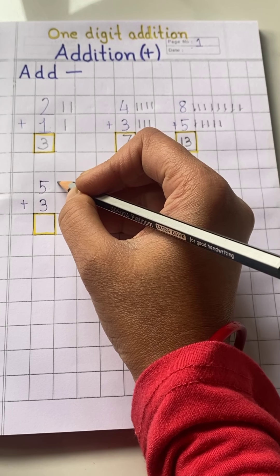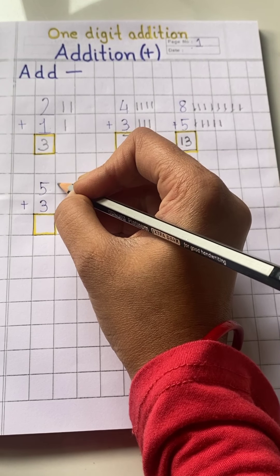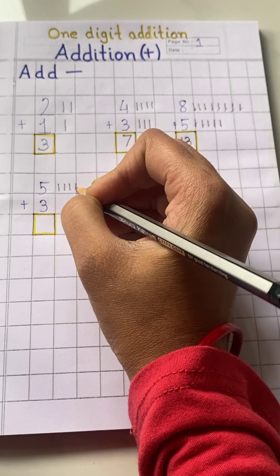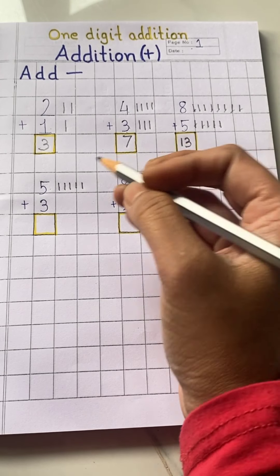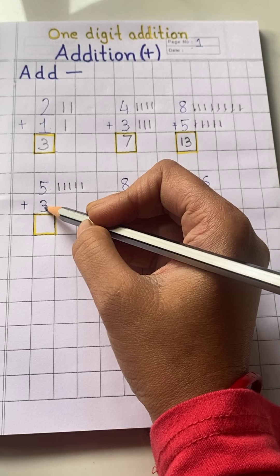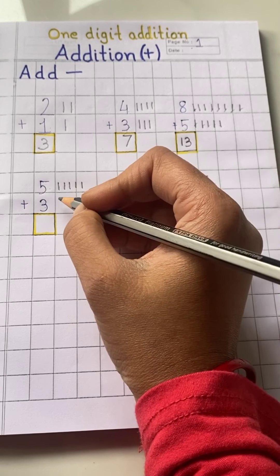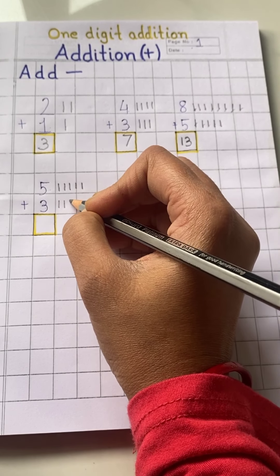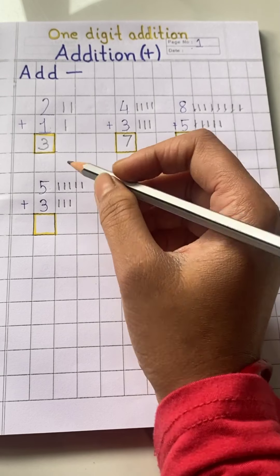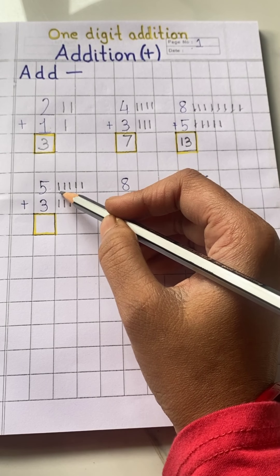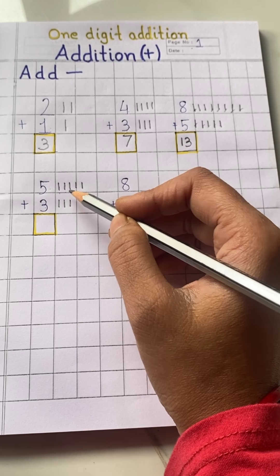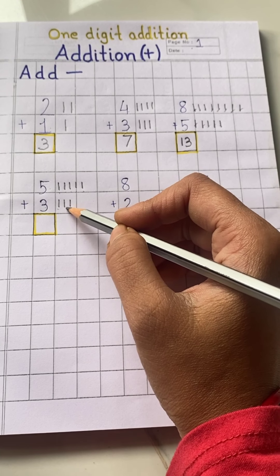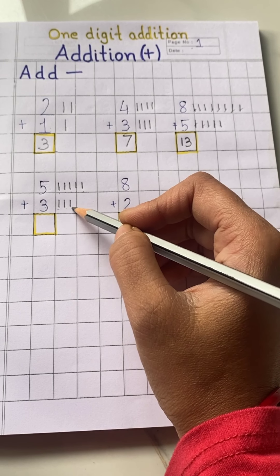Next number is five — make five lines: one, two, three, four, five. The number is three — make three lines: one, two, three. Now count: one, two, three, four, five, six, seven, eight.